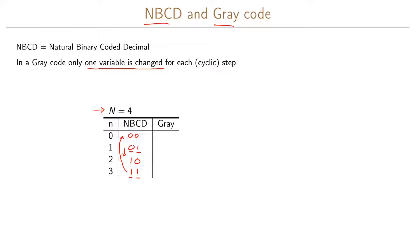For gray coding we only want to change one variable at a time. So we code 0 as 00, 1 as 01 — only the second variable changes. For step 2 we use 11, changing only the first variable. For step 3 we use 10, again changing only one variable. And cyclically going back to step 0, we again change only one variable.